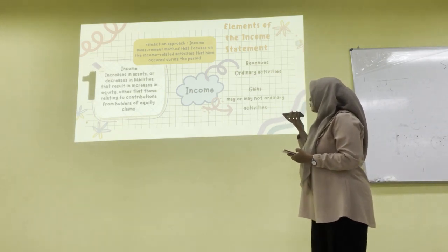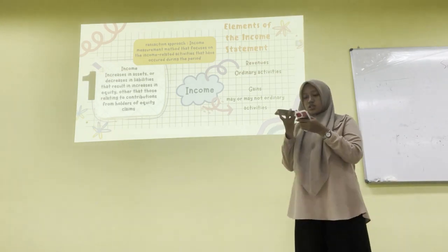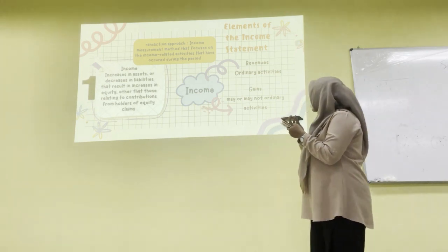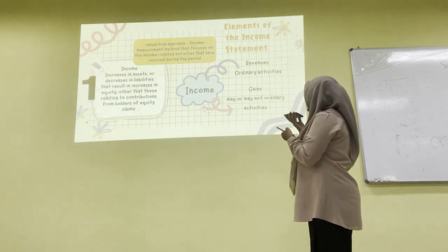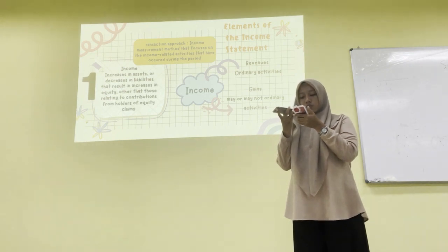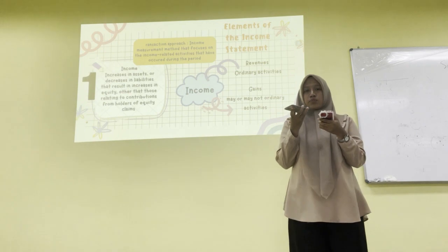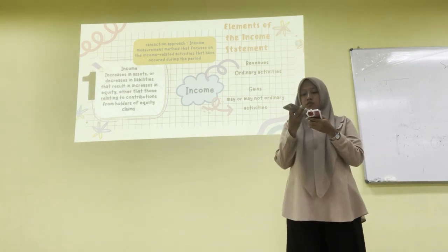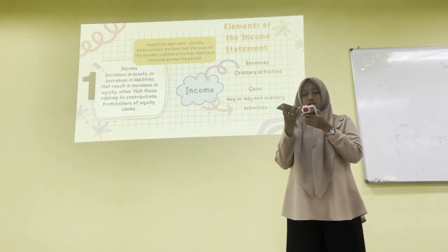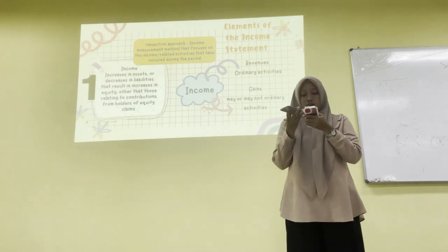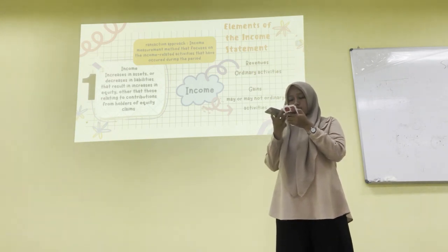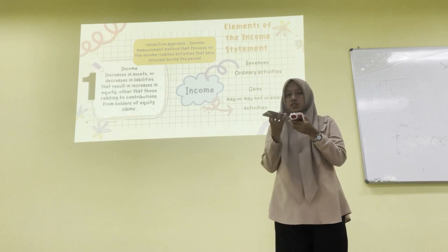Revenues come from ordinary activities like sales, fees, interest, dividends, and rents. On the other hand, gains may or may not arise from ordinary activities. Ordinary activity gains include gains on the sale of long-term assets — if you sell a long-term asset and the book value is smaller than the sale price, it is called a gain. Non-ordinary activity examples include gains on trading securities.